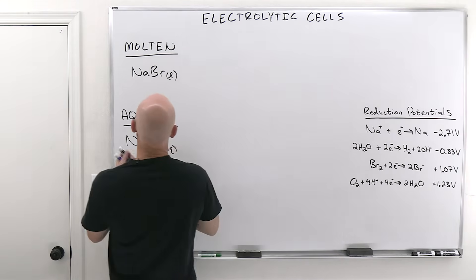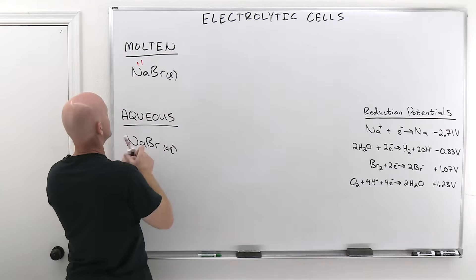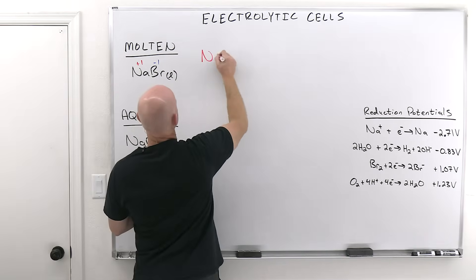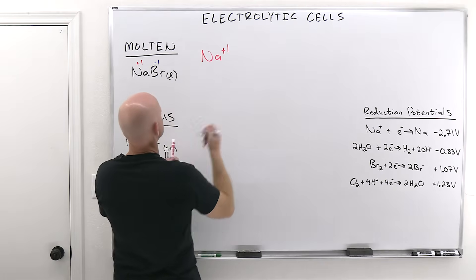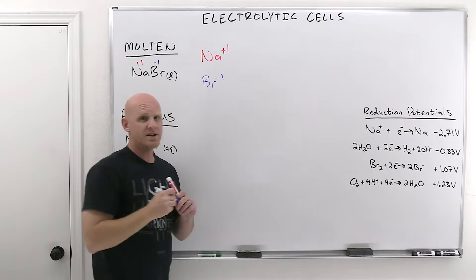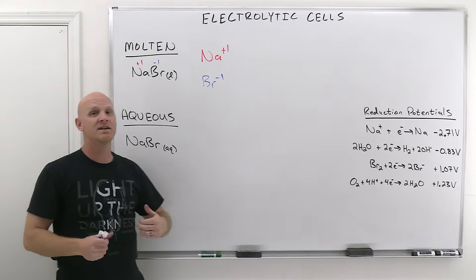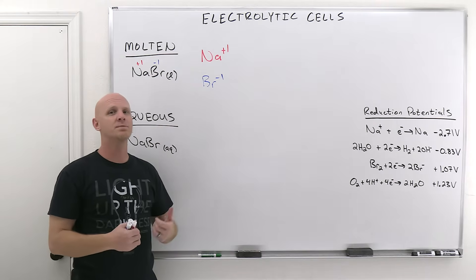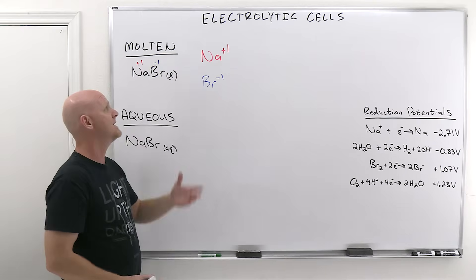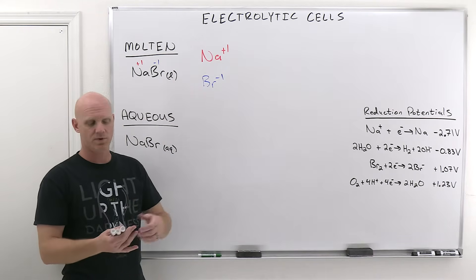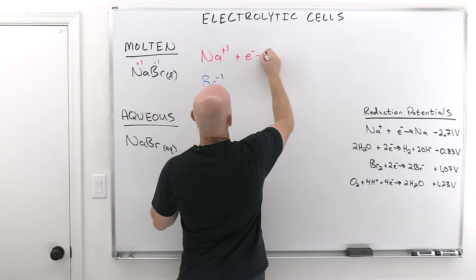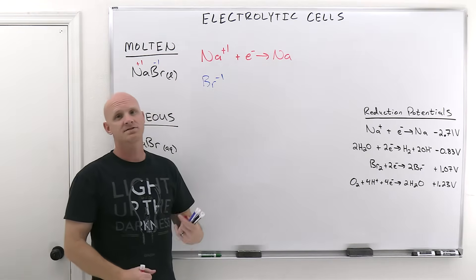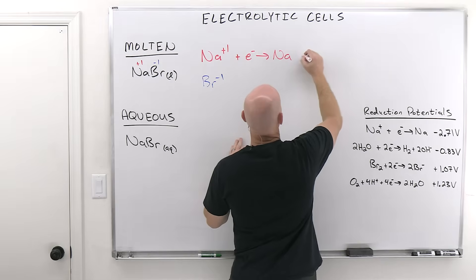We've got a cation in the plus one oxidation state and an anion in the minus one oxidation state — sodium plus one and bromine minus one. In electrolysis, most of the time you're going to be producing elements. You can turn Na⁺ into Na by gaining an electron — the cation is getting reduced to its elemental form at the cathode. For the anion, Br⁻, two bromide ions lose two electrons to reach the zero oxidation state — that's oxidation at the anode.